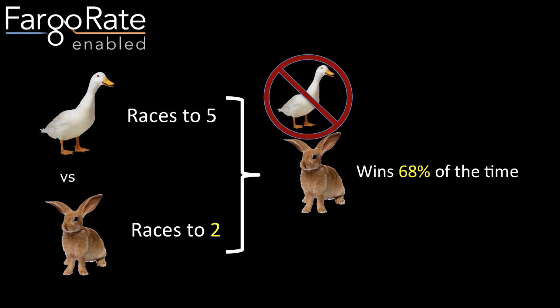If we go one step further and have the Rabbit go to only two — a five-to-two race — you see that the tides have changed. The Rabbit now actually has the advantage, and nobody in their right mind would want to purposefully do that.